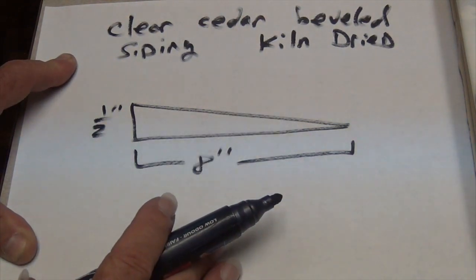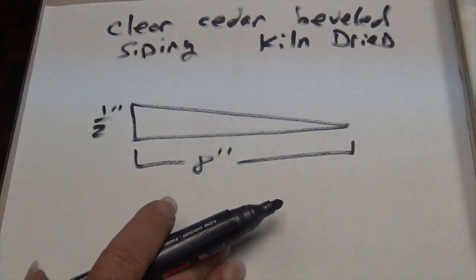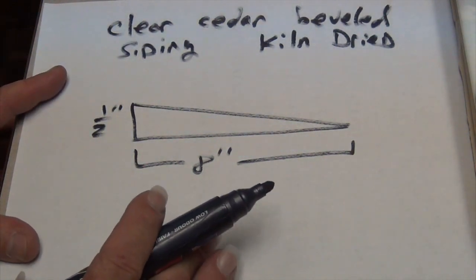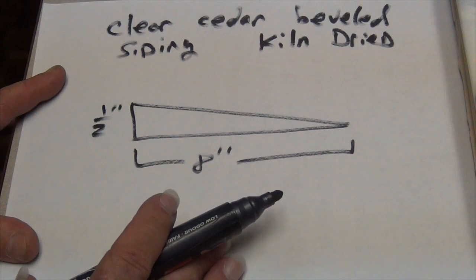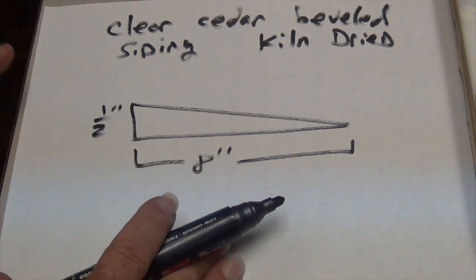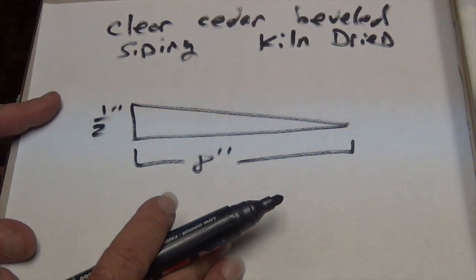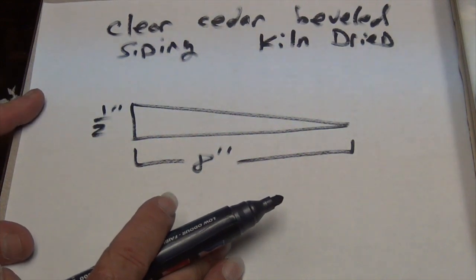Then you need to find a lumber yard that has a thickness planer that can thin down a board. You want to set the gap on the planer to three-sixteenths of an inch.